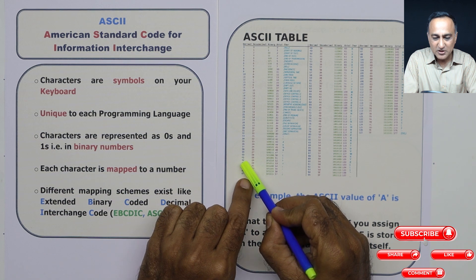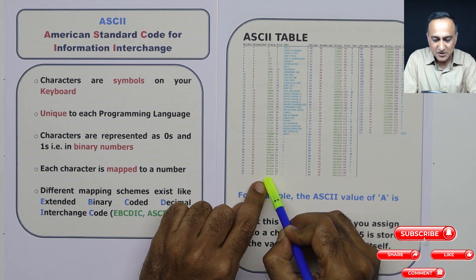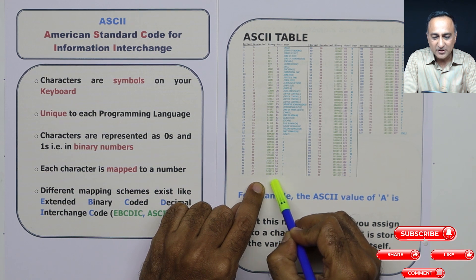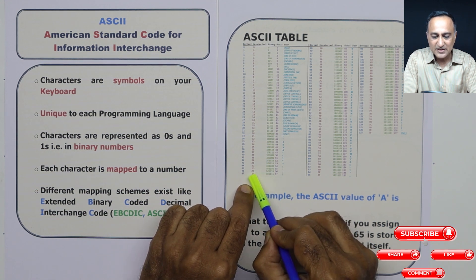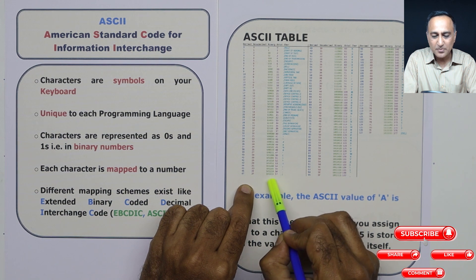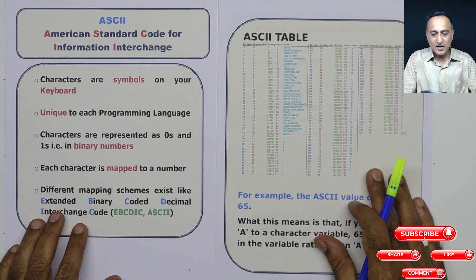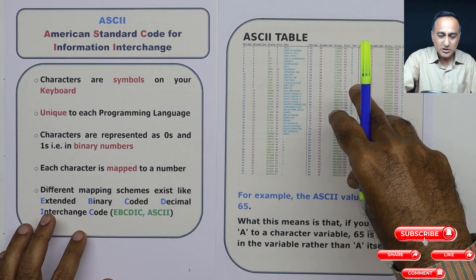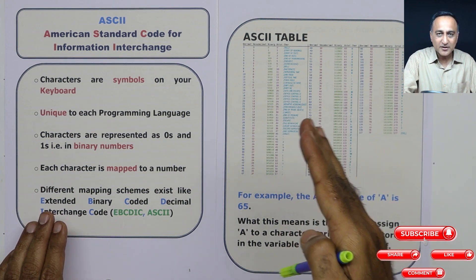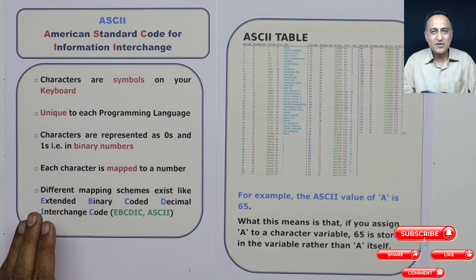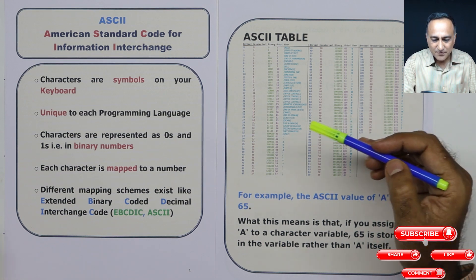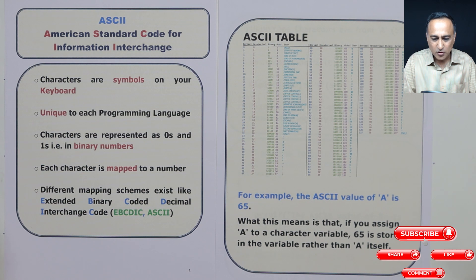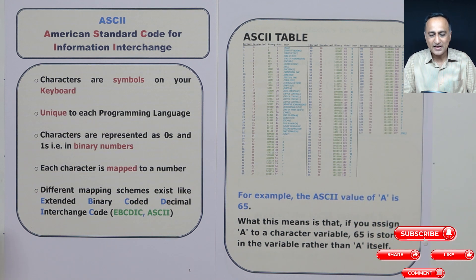In the table, the first column has the decimal representation, then there is the binary representation — which is what is actually used for internal storage — and finally the octal and hexadecimal representations are also shown. In most programming, you need to know only the ASCII values of capital A to capital Z, small a to small z, and the digits starting from 48 to 57. That's all. There is no need to memorize the ASCII value of every character; you can always look at the table to find the values.